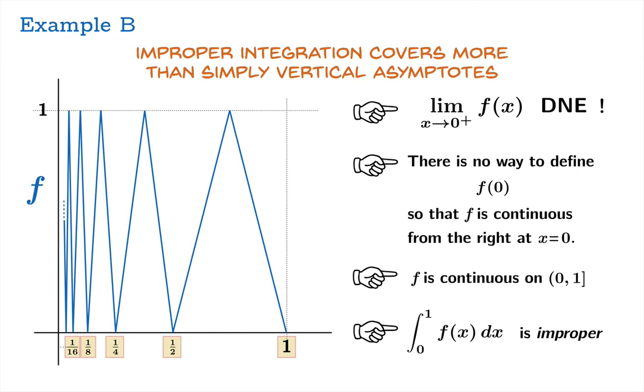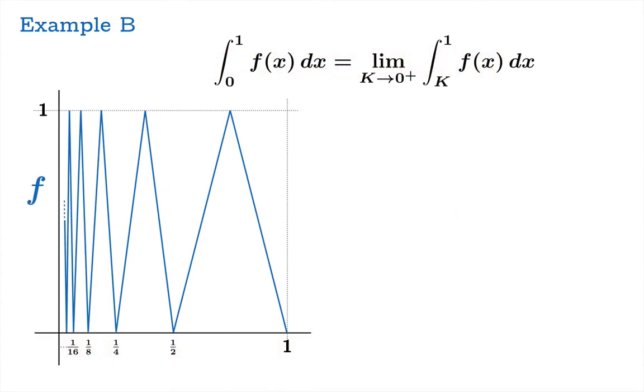And that means that the integral of f from 0 to 1 is an improper integral. And to deal with it officially we would have to look at the integral from k to 1 as k goes to 0 from the right.